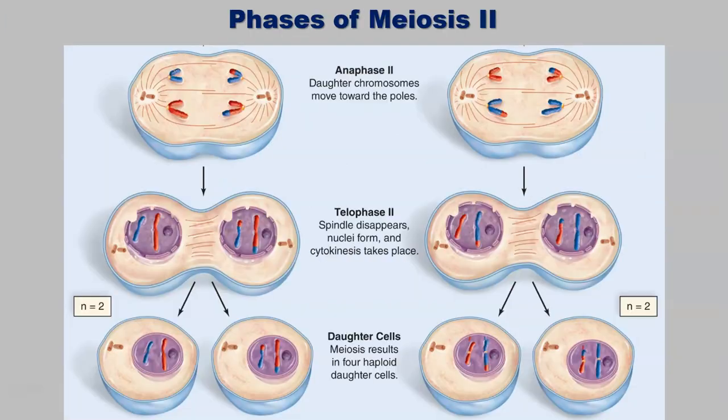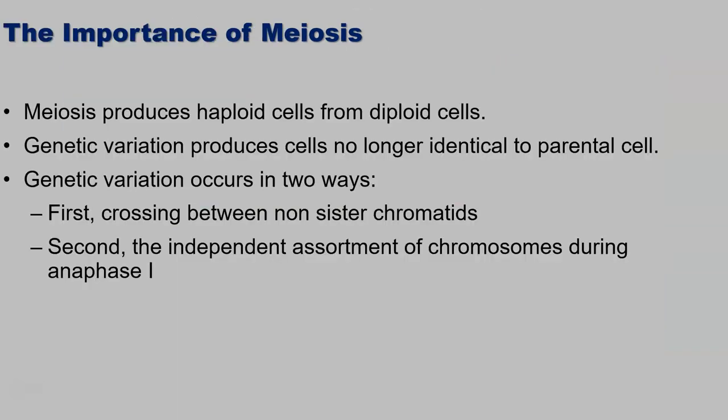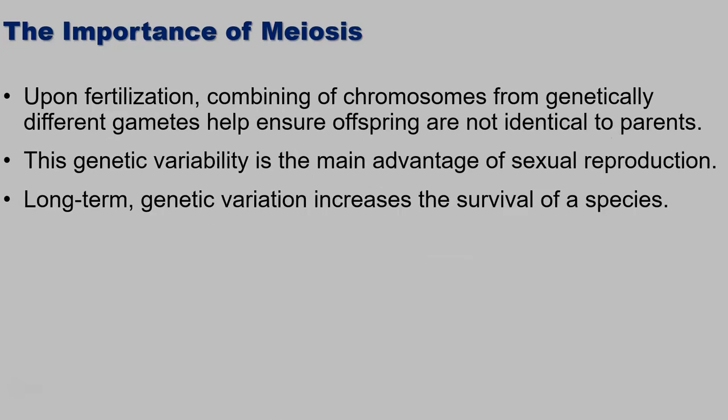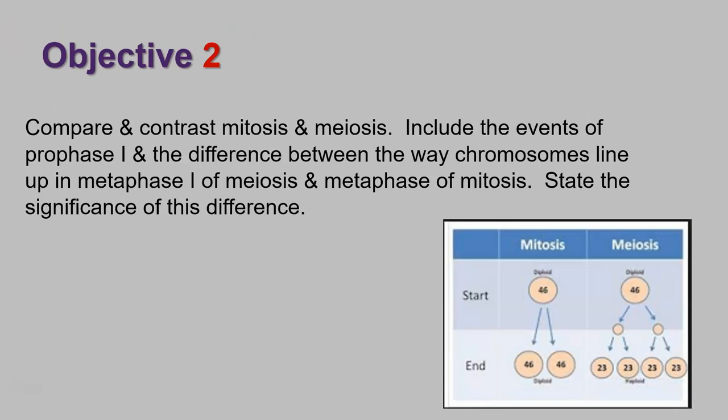It's very important that we produce haploid cells that have the correct haploid number. Genetic variation is also produced here, and it produces cells that are no longer identical to the parental cell. Genetic variation occurs in two ways: first by crossing over, and second by independent assortment. Upon fertilization, combining chromosomes from genetically different gametes helps ensure that offspring are not identical to parents. It's the main advantage of sexual reproduction, because long-term genetic variation increases the survival of the species. If we were all so genetically similar that one disease could kill all of us, that would not be good. So genetic variation is very important for the long-term survival of the species.